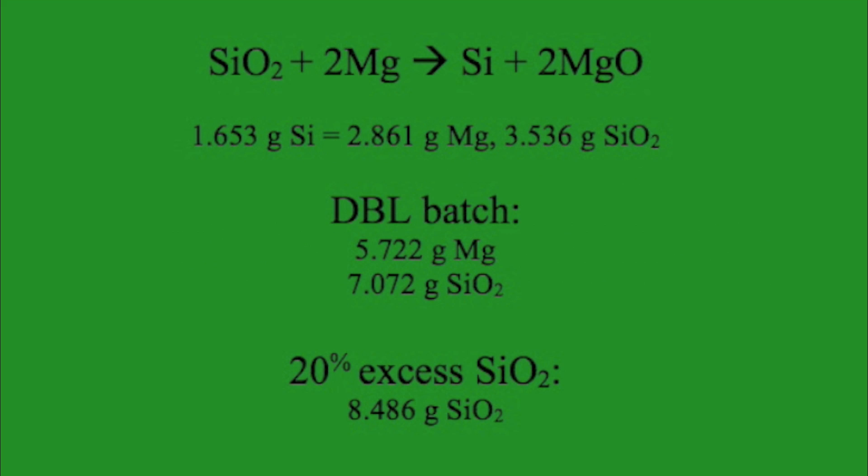To synthesize the silicon, I would need 2.861 grams of magnesium and 3.536 grams of silicon dioxide, or sand. However,